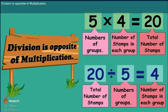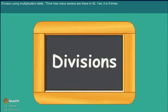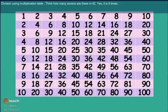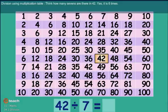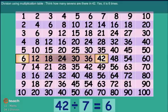Division is the opposite of multiplication. We use multiplication tables to divide. Think: how many 7s in 42? Yes, it is 6 times.